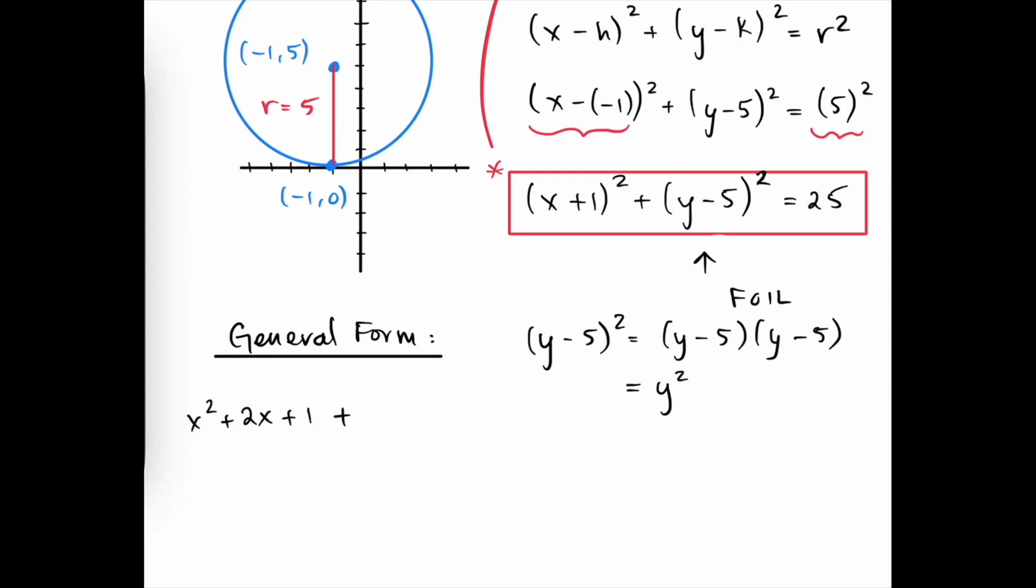The first two terms multiplied together are y squared. Negative 5 times y is negative 5y. The inner terms also give us negative 5y. And then plus 25 are the last two terms multiplied together. Combining like terms here, we get y squared minus 10y plus 25.